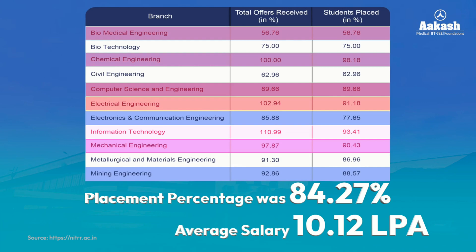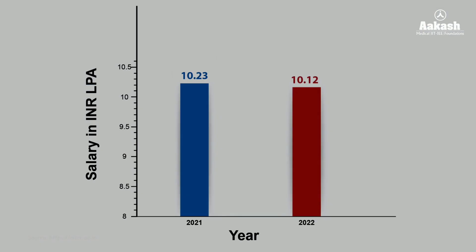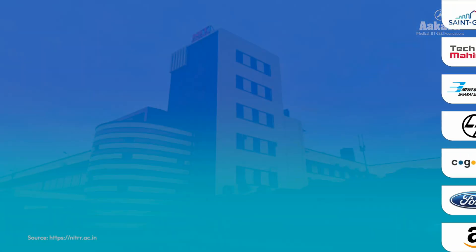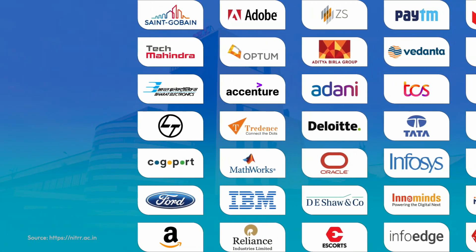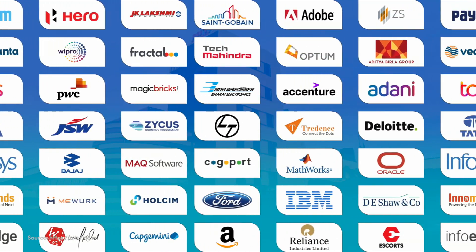The overall placement percentage was 84.27% with an average salary package of 10.12 lakh per annum. There was a rise of over 27% in the number of offers received during B.Tech placements 2022 compared to 2021. However, a slight fall of around 1% was witnessed in the average package — from 10.23 lakh in 2021 to 10.12 lakh in 2022. The placement department is very active, and the college is visited regularly by top companies and brands.